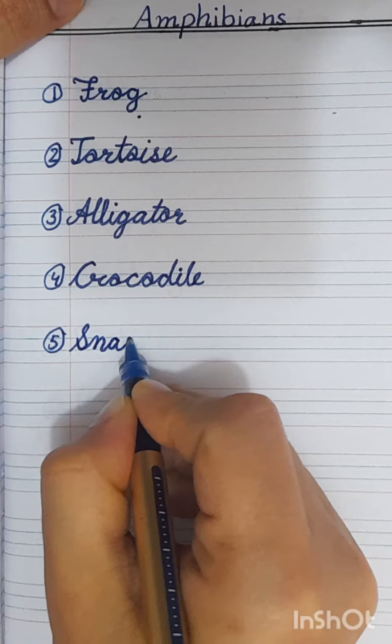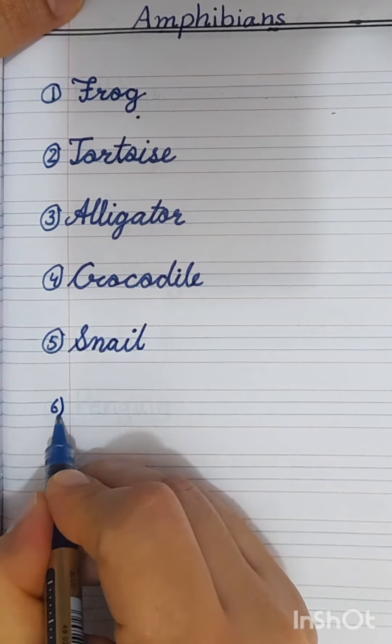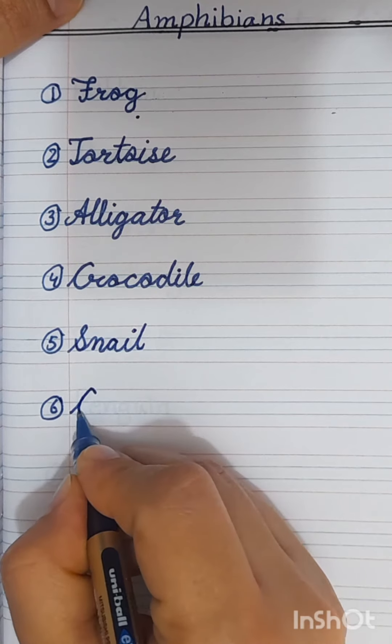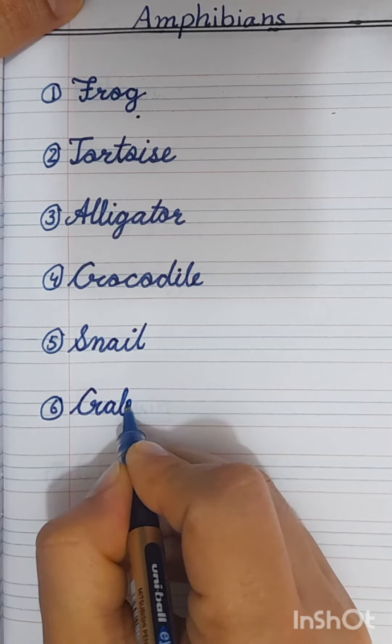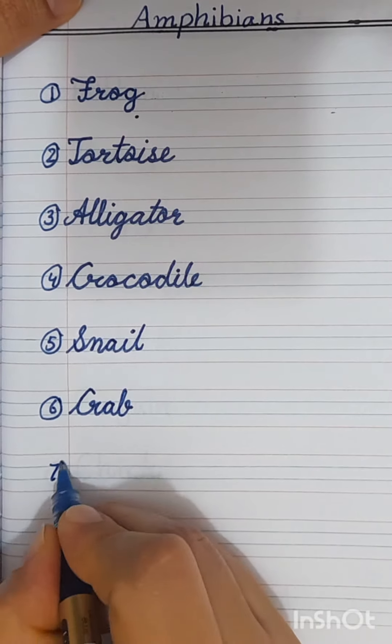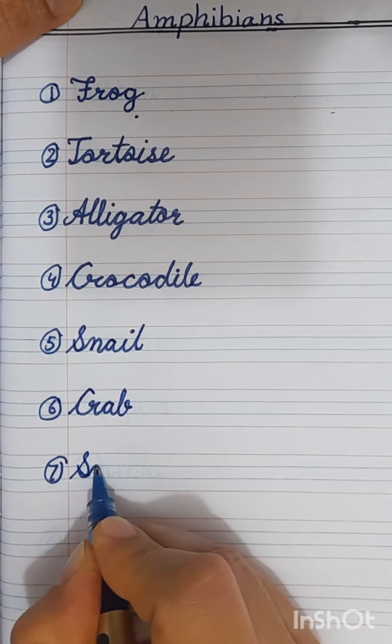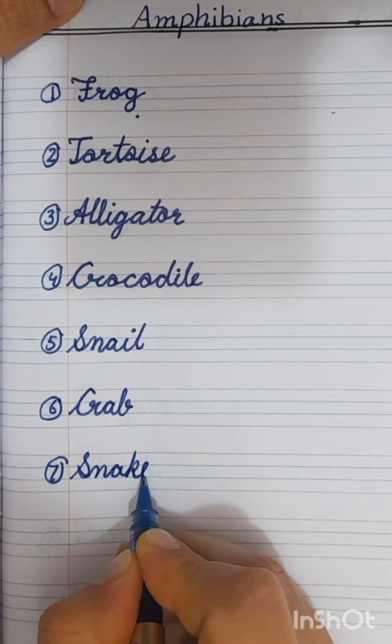A-I-L, snail. Number six: crab, C-R-A-B, crab. Number seven: snake, S-N-A-K-E.